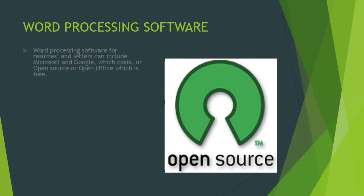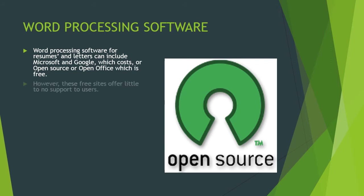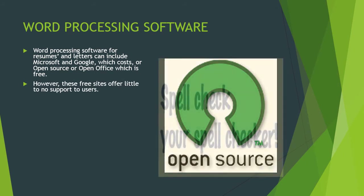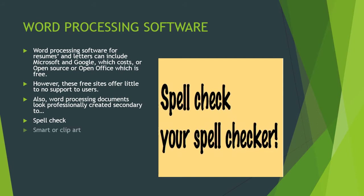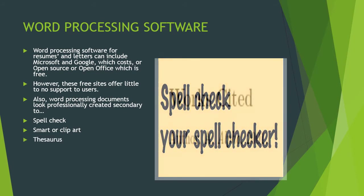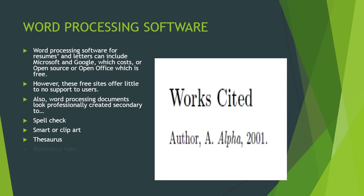Word processing software — most students use this. It can be used for resumes and letters, and can include Microsoft and Google, which cost money, or open source/open office, which is generally free. However, the free sites offer little to no support to users. Word processing documents look professionally created because you can use spellcheck, clipart, the thesaurus, and the reference tabs. If you have an official document, you can always use the signature options.